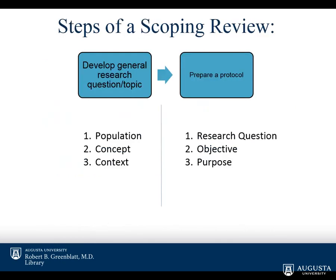The first step in completing a scoping review is to develop a research question or topic you'd like to learn more about. However, scoping reviews don't usually use the PICO format, because they don't concern themselves with effectiveness or comparing interventions — they just want to know what's out there. Instead, a more general format is used: the PCC format, covering your Population, your Concept, and the Context in which you're examining those two pieces.